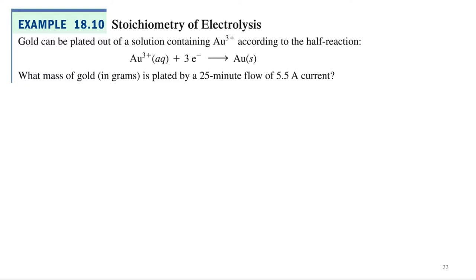Alright, so gold can be plated out of a solution containing Au³⁺ according to the following half reaction. Gold plus three gains three electrons, produces gold solid. So what mass of gold in grams is plated by a 25 minute flow of 5.5 amperes of current?